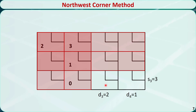Find the Northwest Corner cell in the remaining tableau, which is this one. Allocate as much as possible to this cell. The largest amount we can allocate is 2. We put 2 here and subtract it from D3 and S3. D3 will be 0, S3 will be 1. We cross out this column and remove D3.